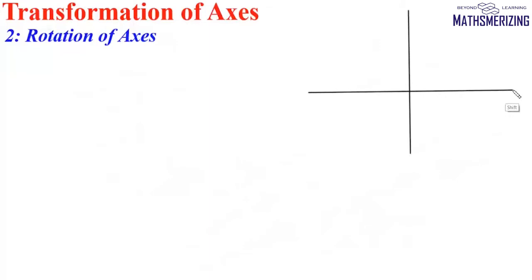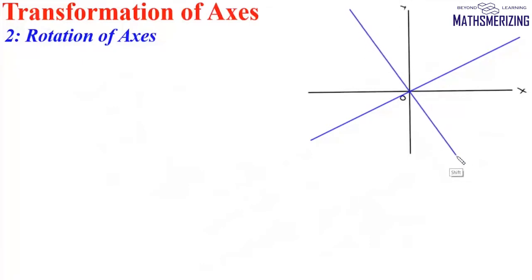The second transformation of axes is rotation of axes. In this transformation, we keep the origin the same and just rotate the axes. Suppose we have a system whose axes are X and Y. Keeping the origin the same, suppose we have rotated the axes by some angle alpha in the anti-clockwise direction. In this new system, say X dash and Y dash, we need to find the coordinate of any point P.